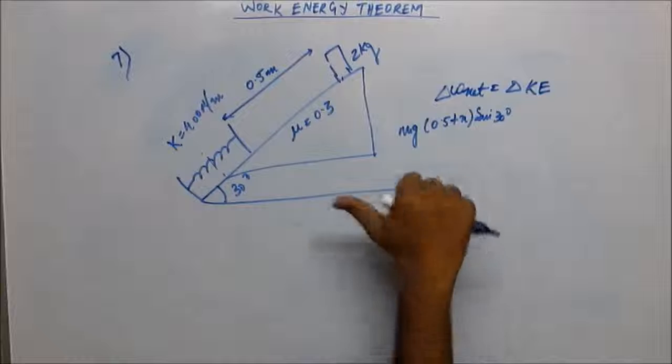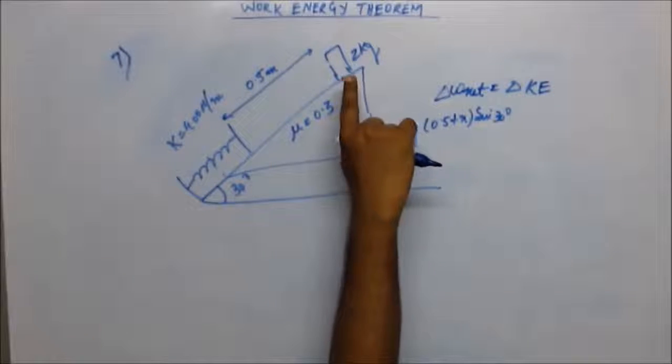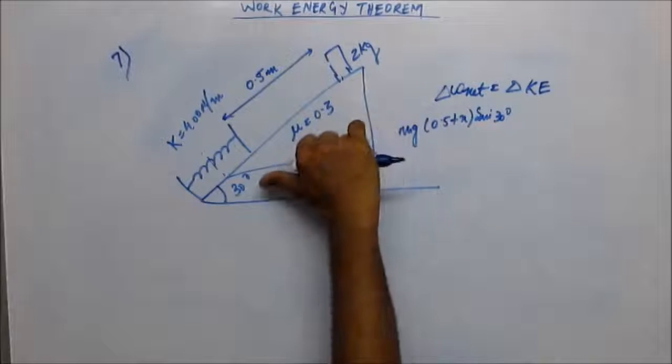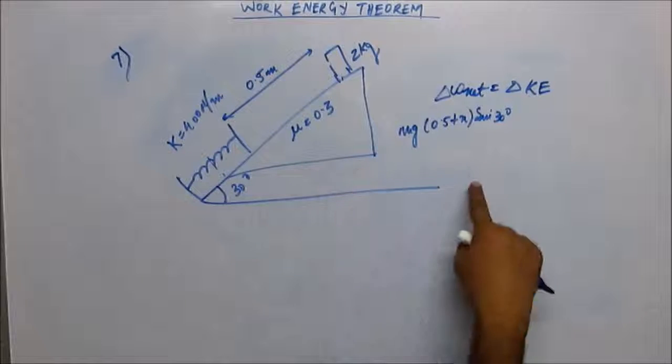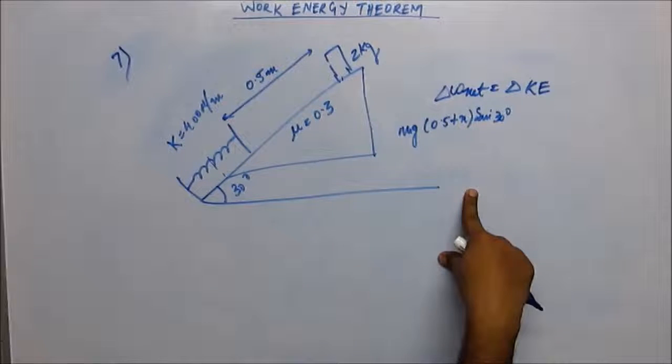Work done by friction force: displacement is downward, friction force is upward, so work done by friction will actually be negative.